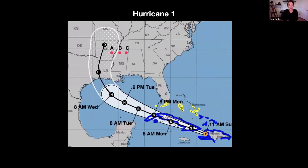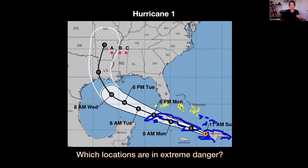I'm going to start with a domain that I have primarily worked in, which is hurricane forecasting. I'm going to show you a forecast with three locations: A, B, and C. I'd like you to answer the question for yourself: which of these locations is in extreme danger? Do you think it's A, B, and/or C?